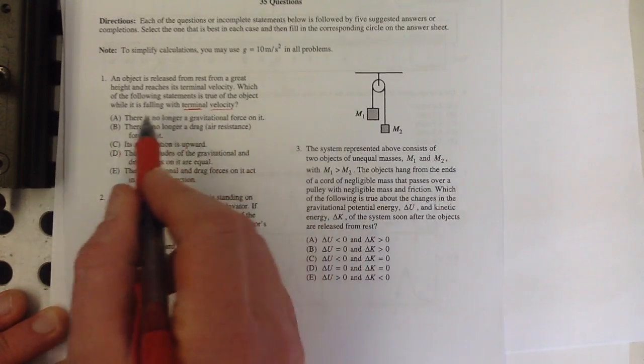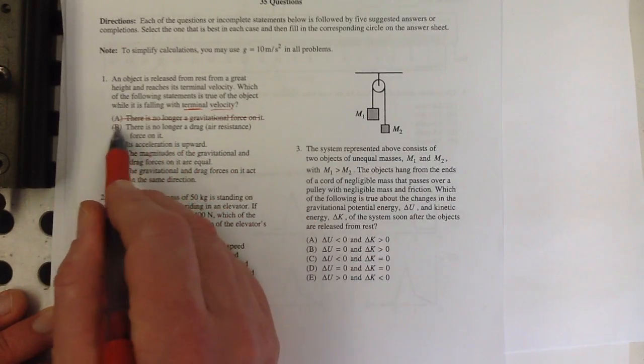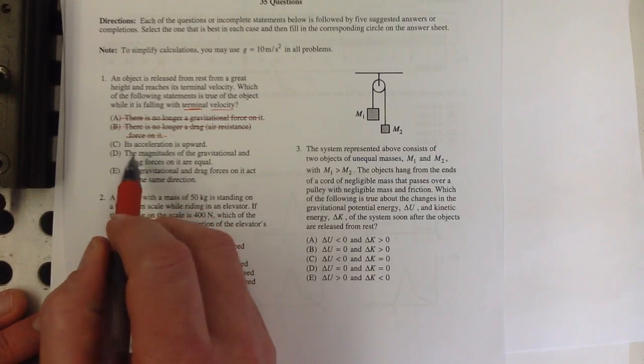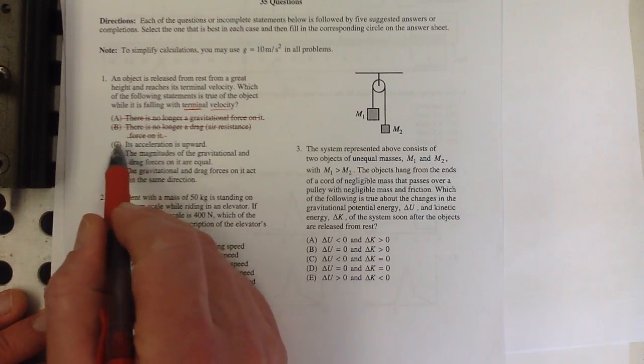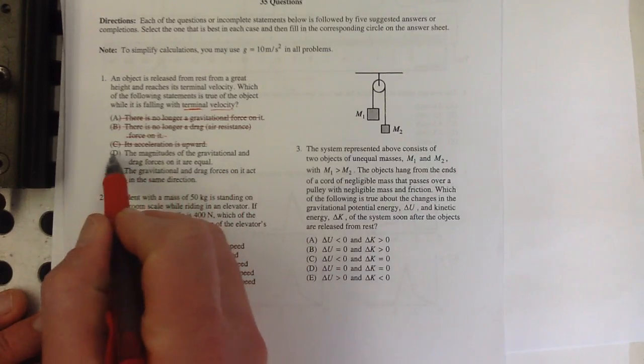There's no longer a gravitational force on it—that's preposterous. There's no longer a drag air resistance force—equally preposterous. Especially if you've ever jumped out of a plane. Its acceleration is upward? No, it has constant velocity.